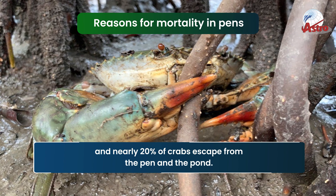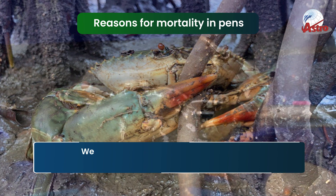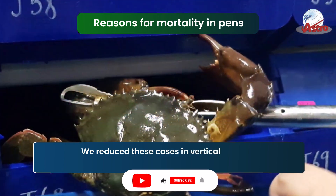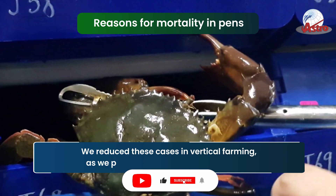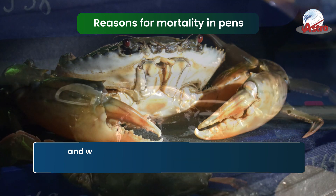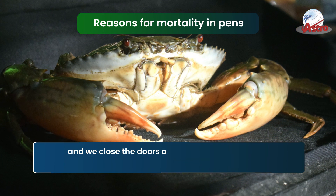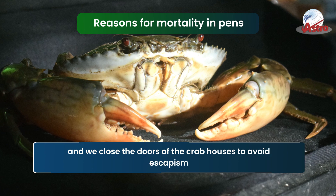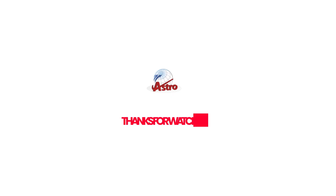Nearly 20 percent of crabs escape from pens and ponds. In vertical farming, these cases are reduced by placing crabs in individual boxes and closing the doors of the crab houses to prevent escapism.